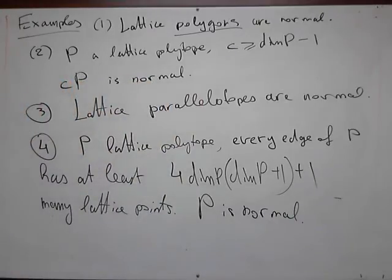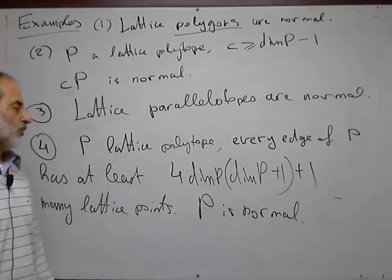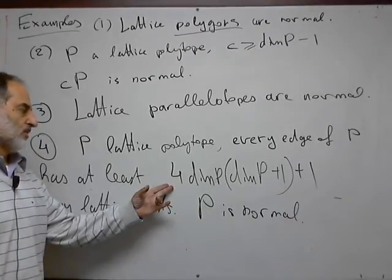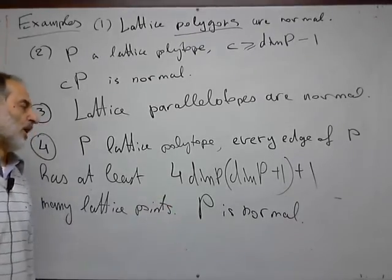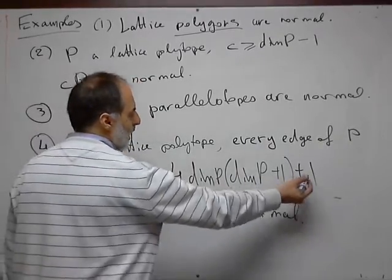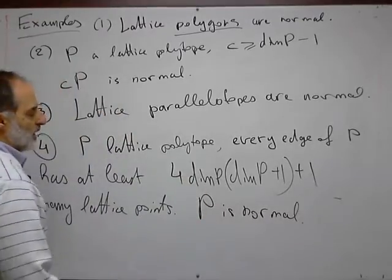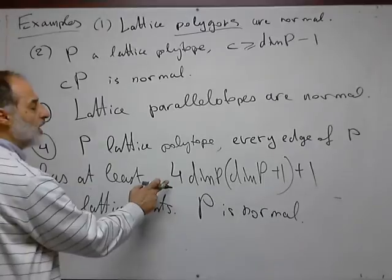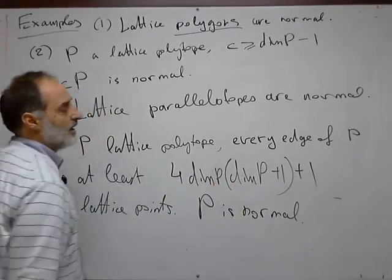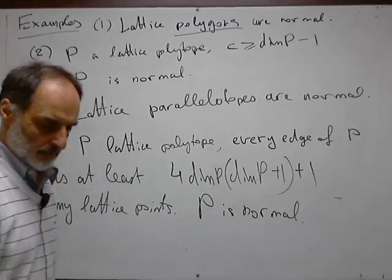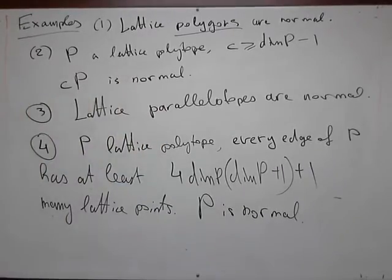In other words, there is a dimension-dependent uniform lower bound for the lattice lengths of the edges that guarantees the normality property. And the lattice length means number of lattice points minus one. So if the lattice length of every edge is at least four times the dimension times the dimension plus one, then the polytope is normal.